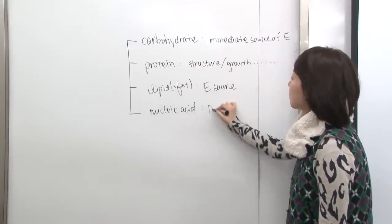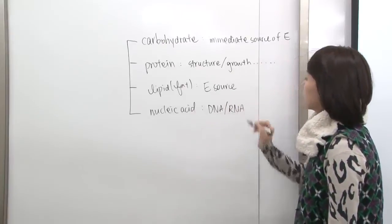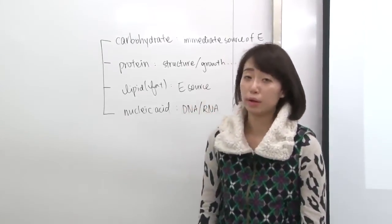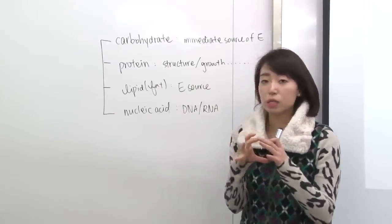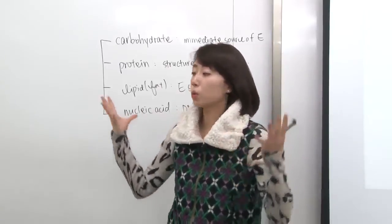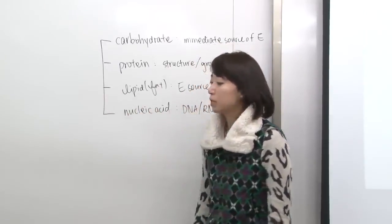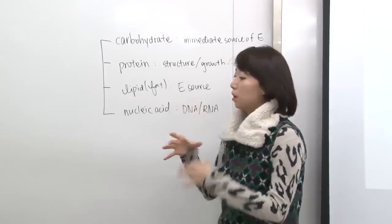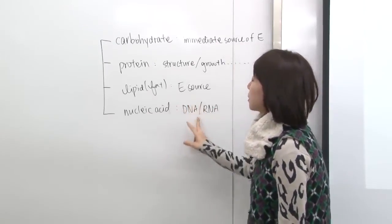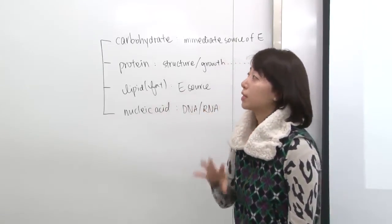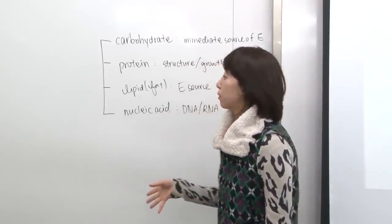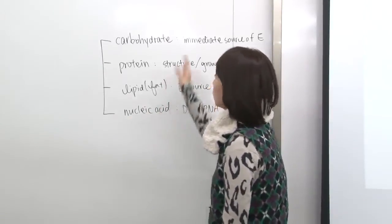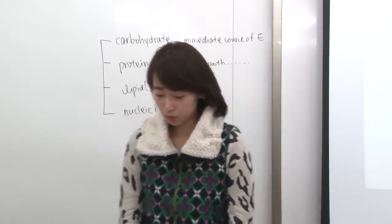Nucleic acid is the compound that makes up DNA and RNA. This is very important because it codes all the information needed in our body. DNA exists within the nucleus and is inherited from our parents. Our unique genetic combination codes all the proteins, enzymes, and hormones produced. We'll look more into this structure shortly.